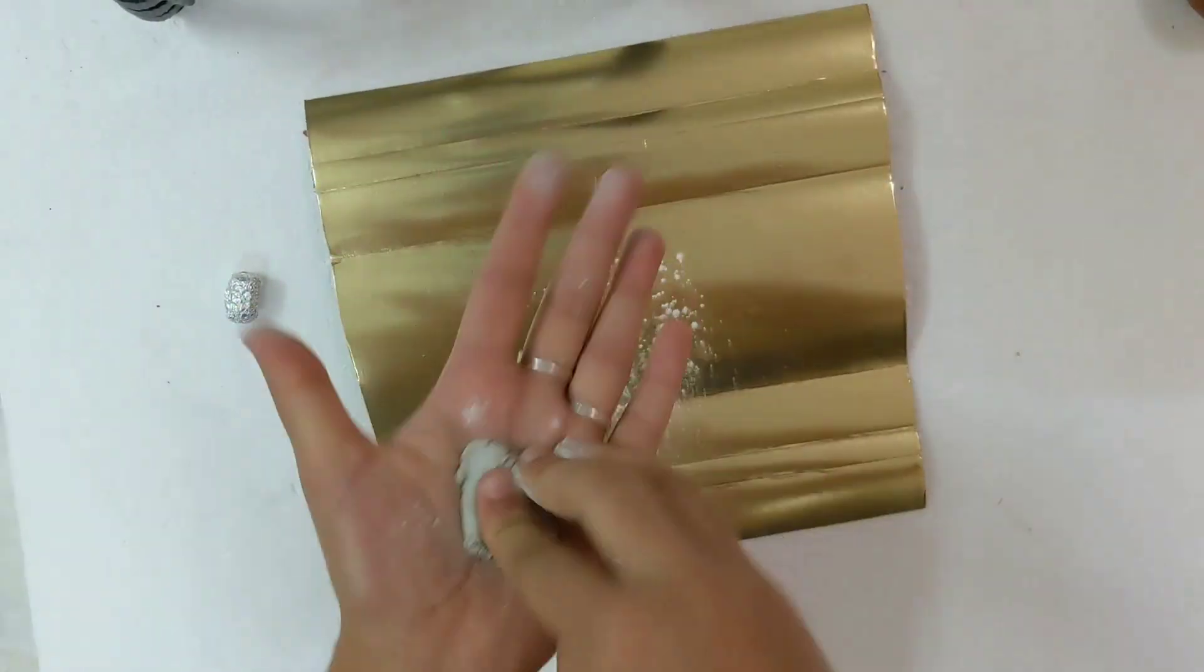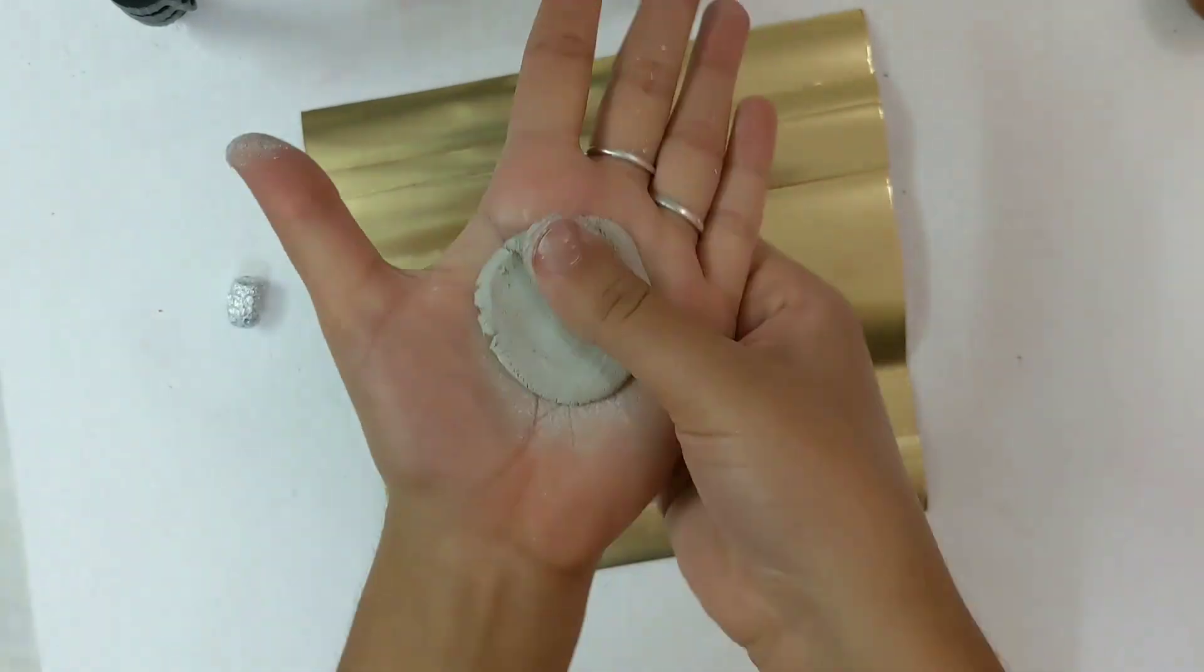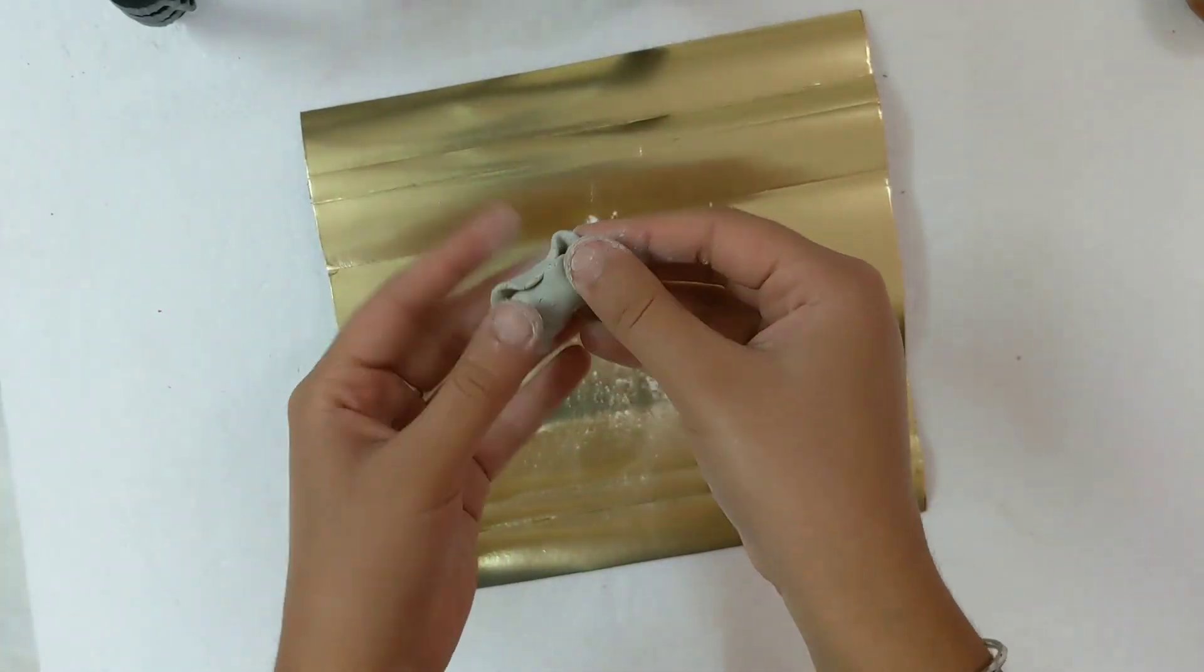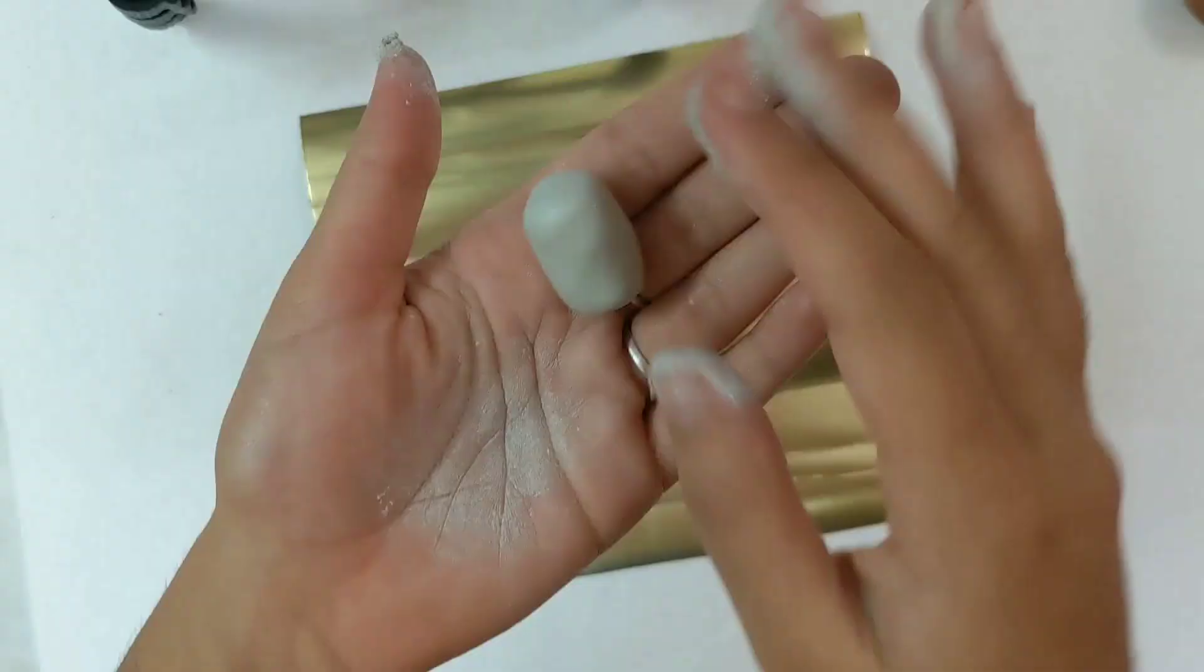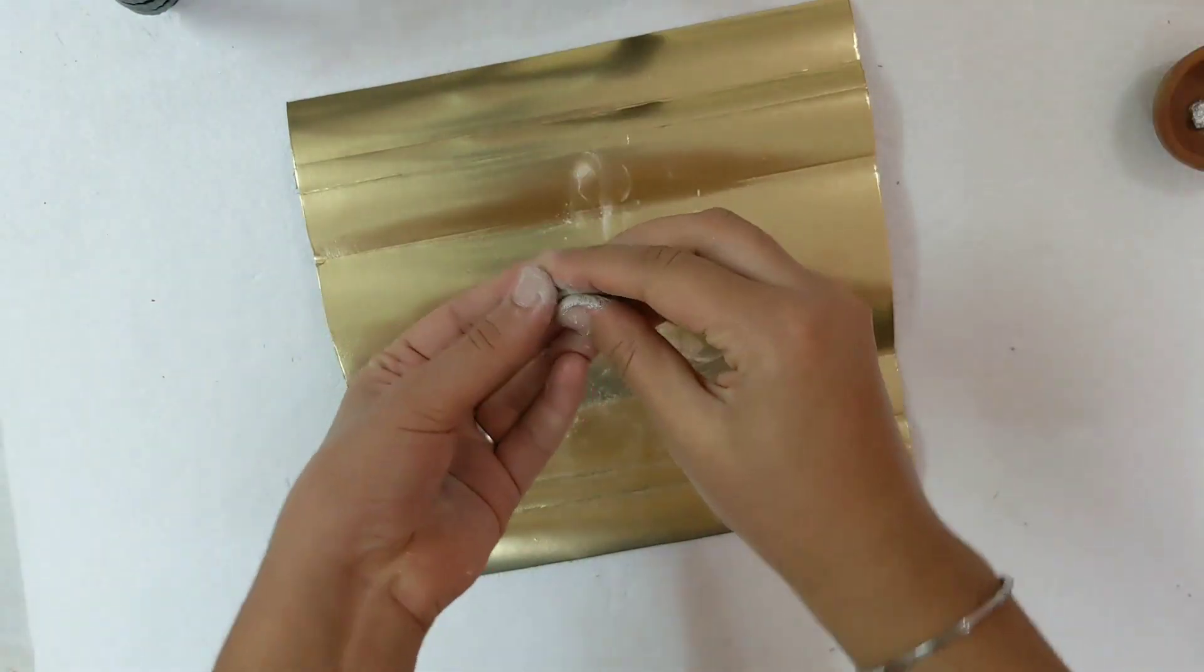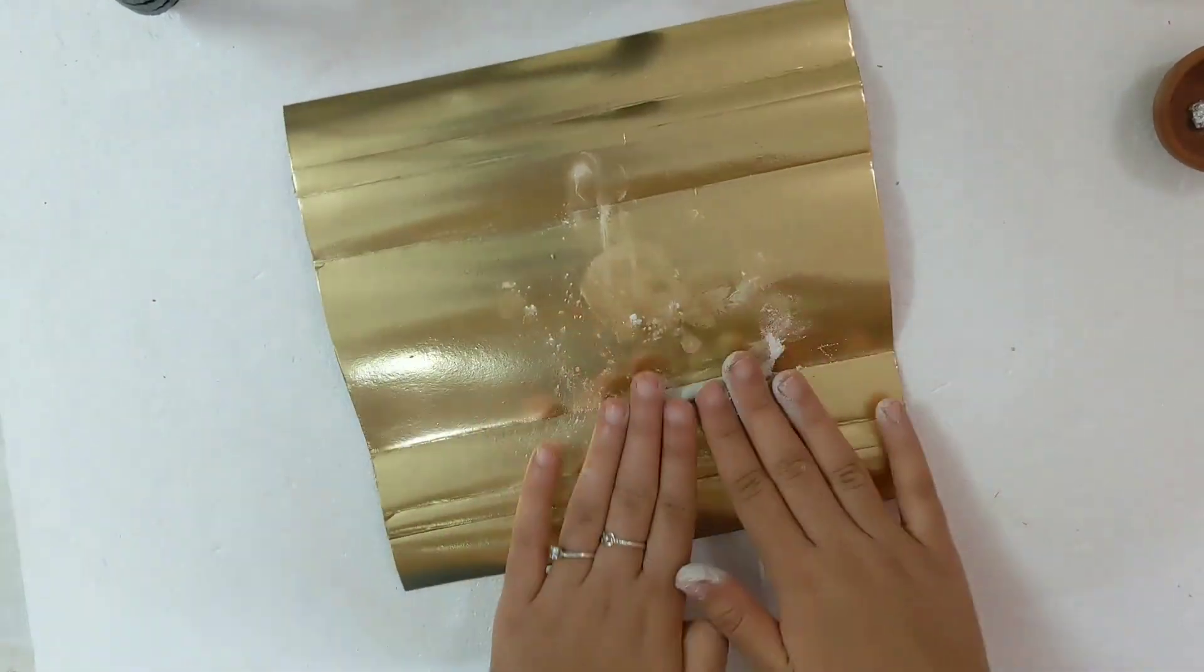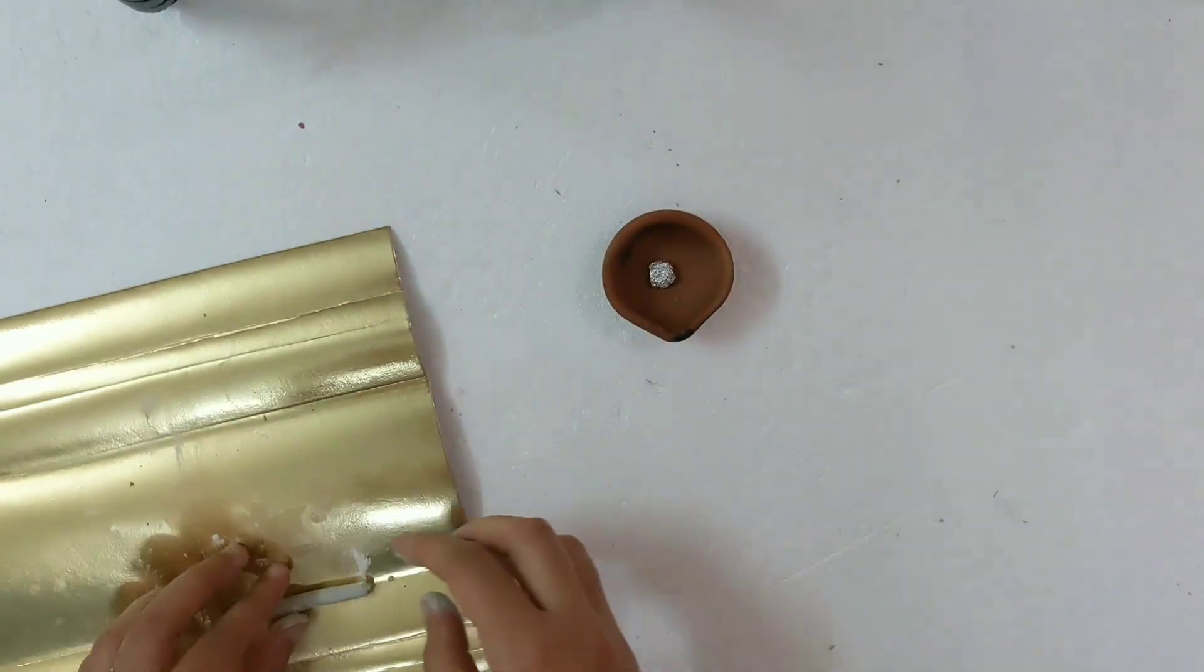To protect my surface, I'm using this golden sheet. So this clay was a little bit sticky and difficult to use, and to avoid this sticking with my hands, I'm using baby powder here. And next, for the base, roll a piece of clay like this.